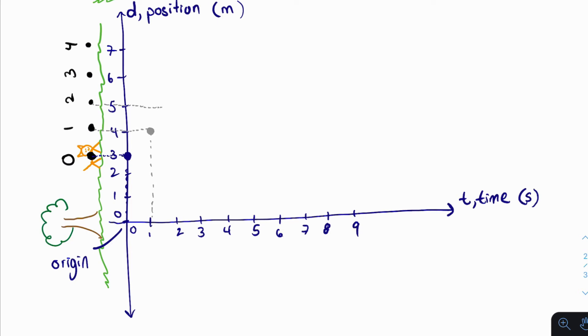At time 2 seconds, the cheetah is 5 meters away. So we have another point, and we continue doing this for the rest of them. Okay, so at time 4 seconds, the cheetah was 7 meters away.